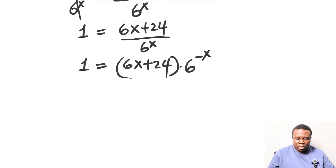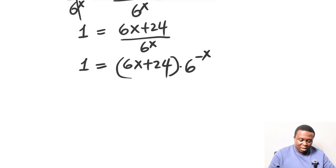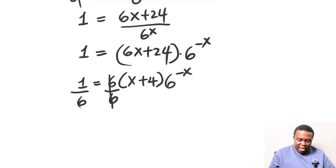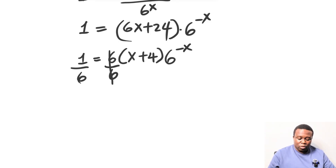Now we are going to try to get the x in the first parenthesis to stand on its own, so we're going to get rid of that 6. To get rid of the 6, we can factor out 6 from that parenthesis. If we do, we get 6 times bracket x plus 4, times 6 raised to the power of minus x. Dividing through by 6, we have 1 over 6 on the left-hand side equals x plus 4 times 6 raised to the power of minus x.